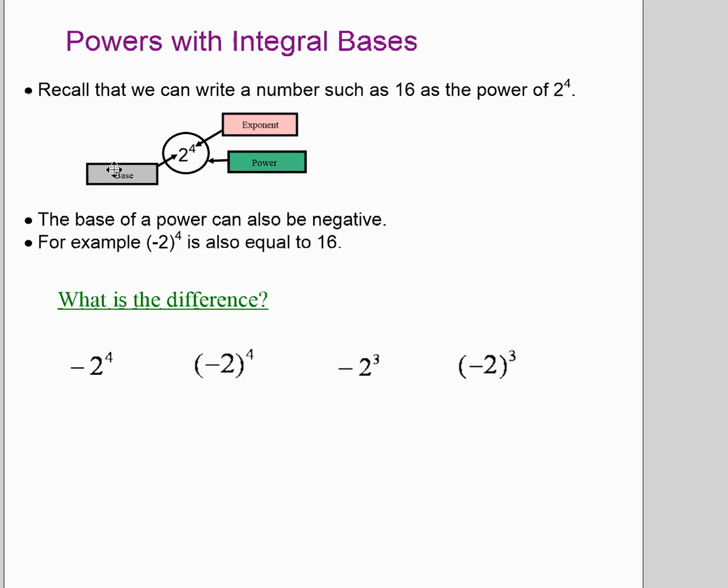What you learned in the investigation was that you can have negative bases. When I write negative 2 in brackets to the 4, that is also 16. Positive 2 to the 4 is 16, so is negative 2 to the 4.